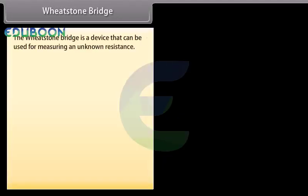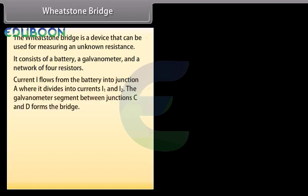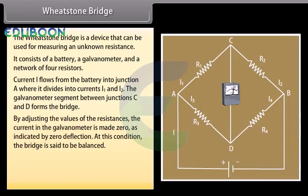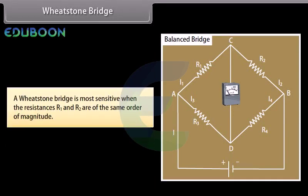Wheatstone bridge: A device used for measuring an unknown resistance. It consists of a battery, a galvanometer, and a network of four resistors. Current I flows from the battery into junction A and divides into I1 and I2. The galvanometer between junctions C and D forms the bridge. By adjusting the resistances, the galvanometer current is made zero. At this balanced condition: R1/R2 = R3/R4. The bridge is most sensitive when R1 and R2 are of the same order of magnitude.